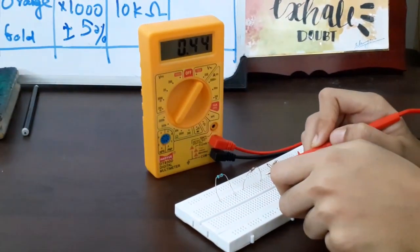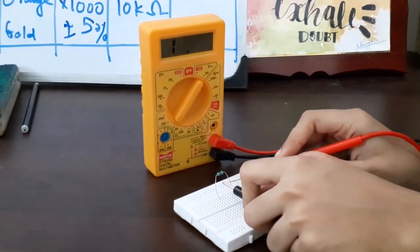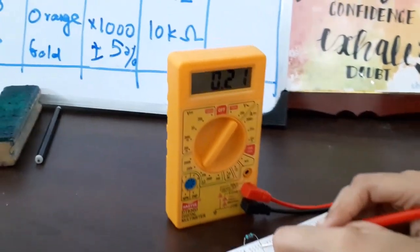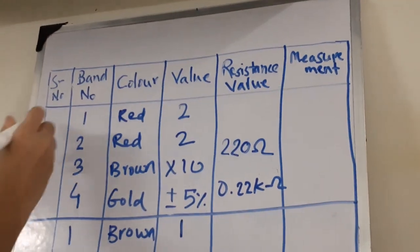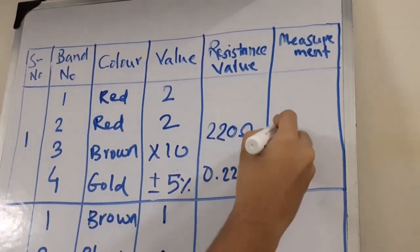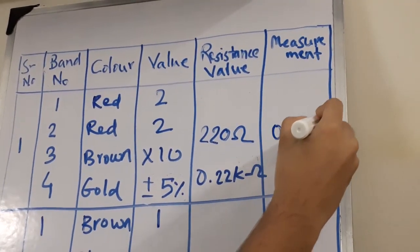Now let us measure for the first resistor. It measures 0.21 K ohms. For the first resistor, we got the measurement value as 0.21 K ohms.